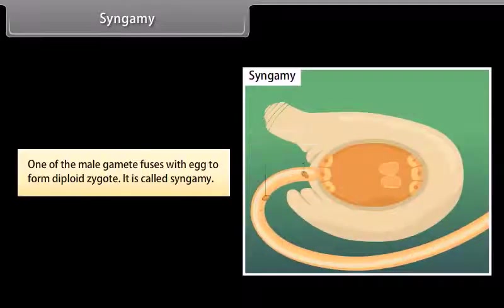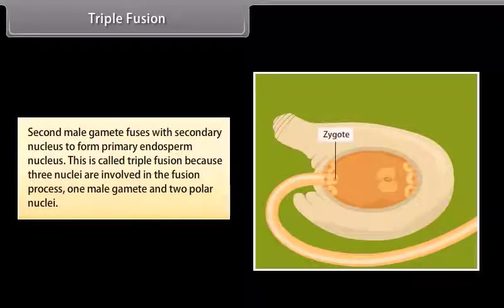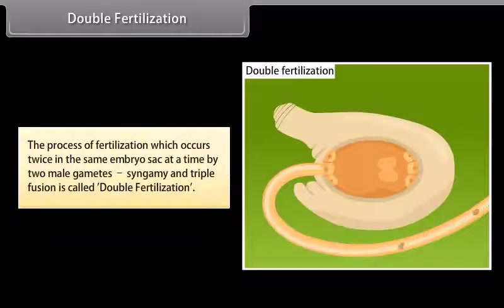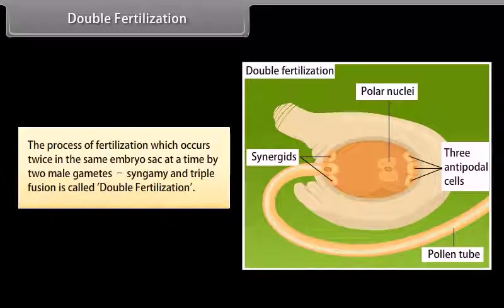Syngamy: one of the male gametes fuses with the egg to form a diploid zygote; this is called syngamy. Triple fusion: the second male gamete fuses with the secondary nucleus to form the primary endosperm nucleus; this is called triple fusion because three nuclei are involved — one male gamete and two polar nuclei. Double fertilization: the process of fertilization which occurs twice in the same embryo sac at a time by two male gametes — syngamy and triple fusion — is called double fertilization.